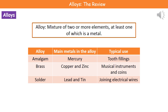Welcome to our review on alloys. The first thing we need to understand is what we're actually talking about when we use the word alloy. Quite simply, it is a mixture of two or more elements, at least one of which has to be a metal. We need to know three alloys, what they're made of, and their typical uses for our exam.